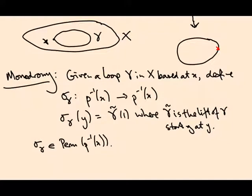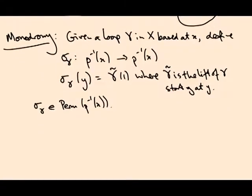Now, that's well defined, but what is not clear is if I give you two different loops that happen to be in the same based homotopy class, do they give you the same permutation? The answer is yes, of course they will, but we need to prove it.